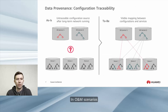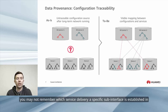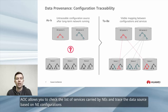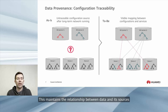In O&M scenarios, it's difficult to trace the configuration source of a device. For example, you may not remember which service delivery a specific sub-interface was established in. AOC allows you to check the list of services carried by NEs and trace the data source based on any configurations. AOC persists YANG data and its sources to the database, maintaining the relationship between data and its sources.